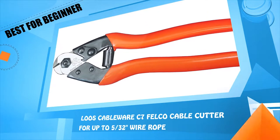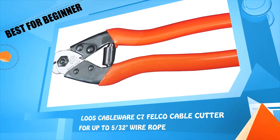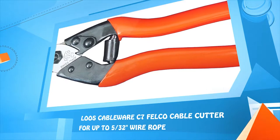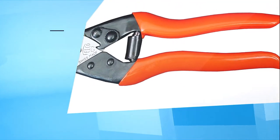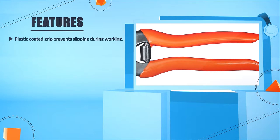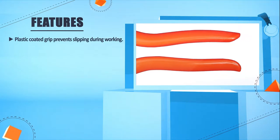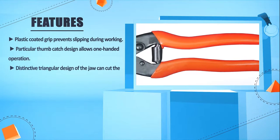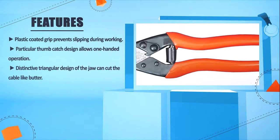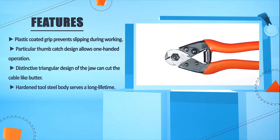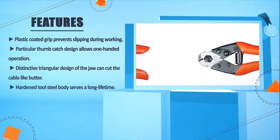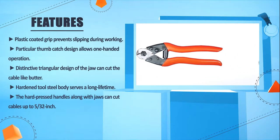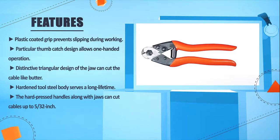Number 5: Loose Cableware C7 Felco Cable Cutter for up to 5/32 inches wire rope. Plastic coated grip prevents slipping during working. Particular thumb catch design allows one-handed operation. Distinctive triangular design of the jaw can cut the cable like butter. Hardened tool steel body serves a long lifetime. The hard-pressed handles along with jaws can cut cables up to 5/32 inches.